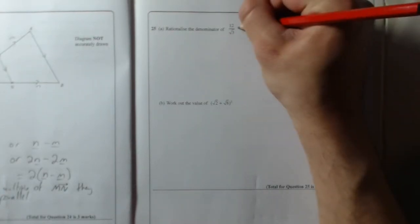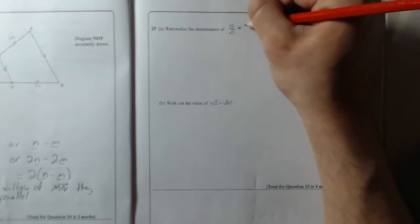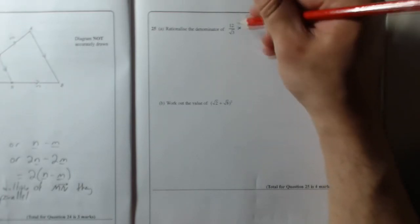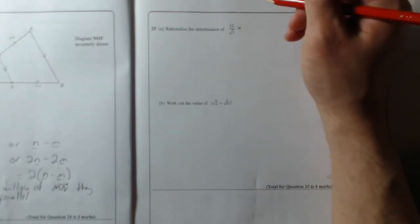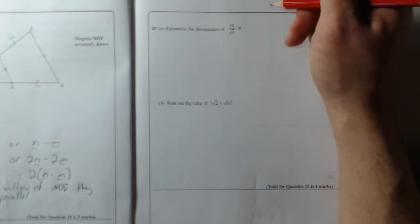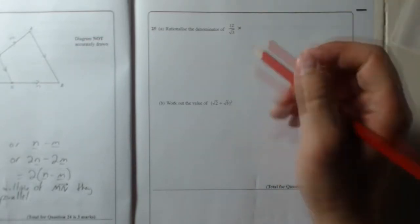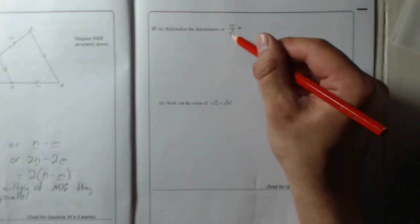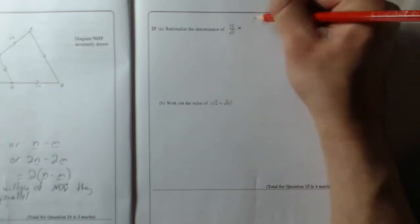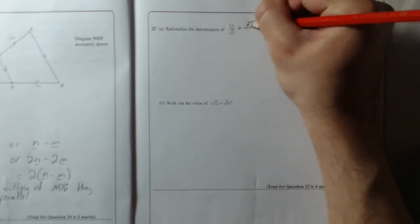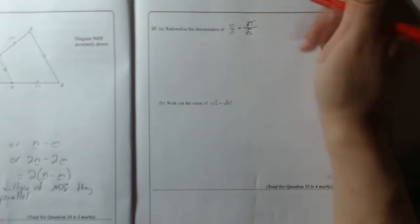So to do that, all you've got to do is multiply the top and the bottom by the same thing. Because remember, if you multiply the top and the bottom of a fraction by the same thing, you will keep the value the same - you'll just get an equivalent fraction. So with these, all you've got to do is multiply by whatever the square root is at the bottom. So we're going to multiply by root 3 at the top and root 3 at the bottom.